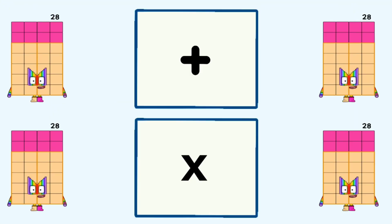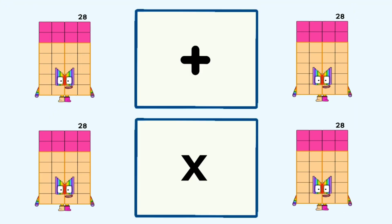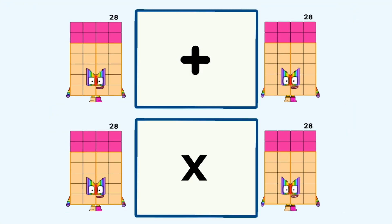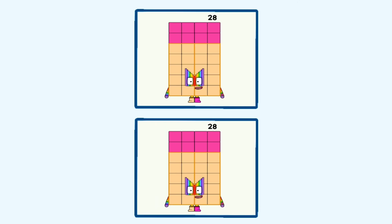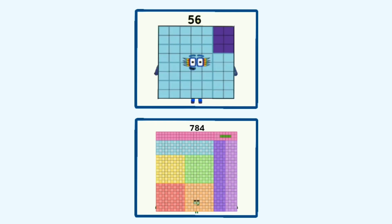28 plus 28 and 28 times 28 equals 56 and 784.